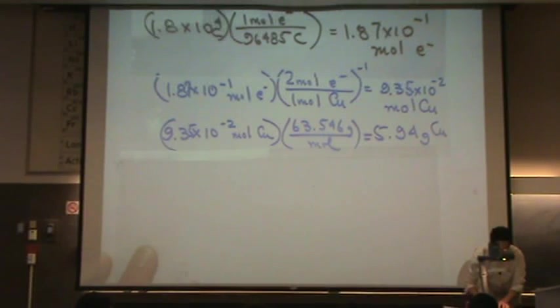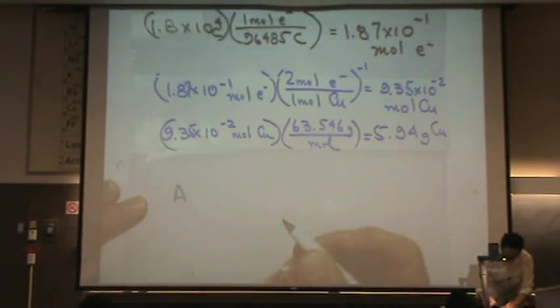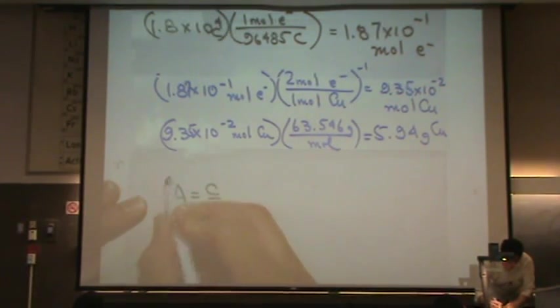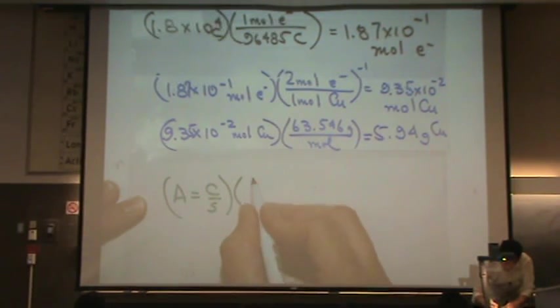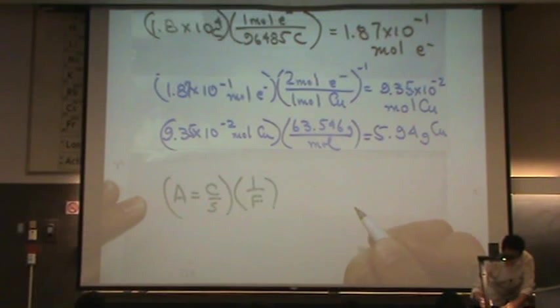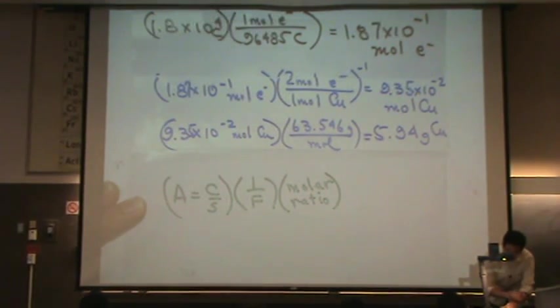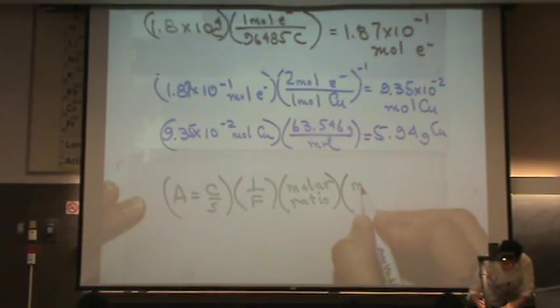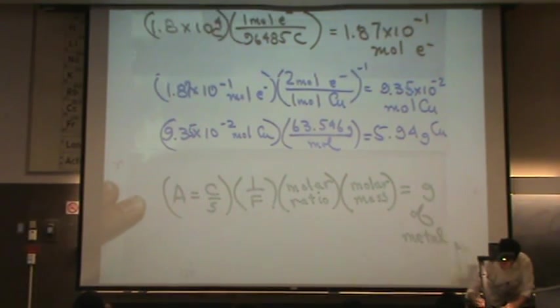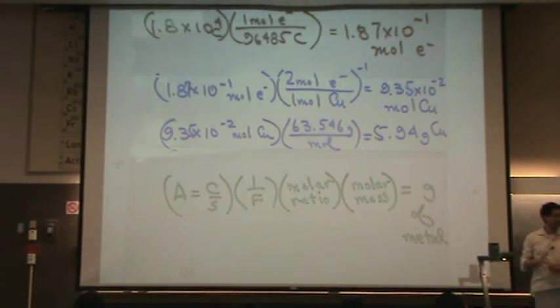So, kind of to summarize, you take the amps, which equals coulombs per second. You essentially multiply by 1 over F. You multiply that by the molar ratio. So that will give you the moles of copper or the moles of metal. And then you multiply that by the molar mass. And that will give you grams of metal. That's the multiplication process you go through.